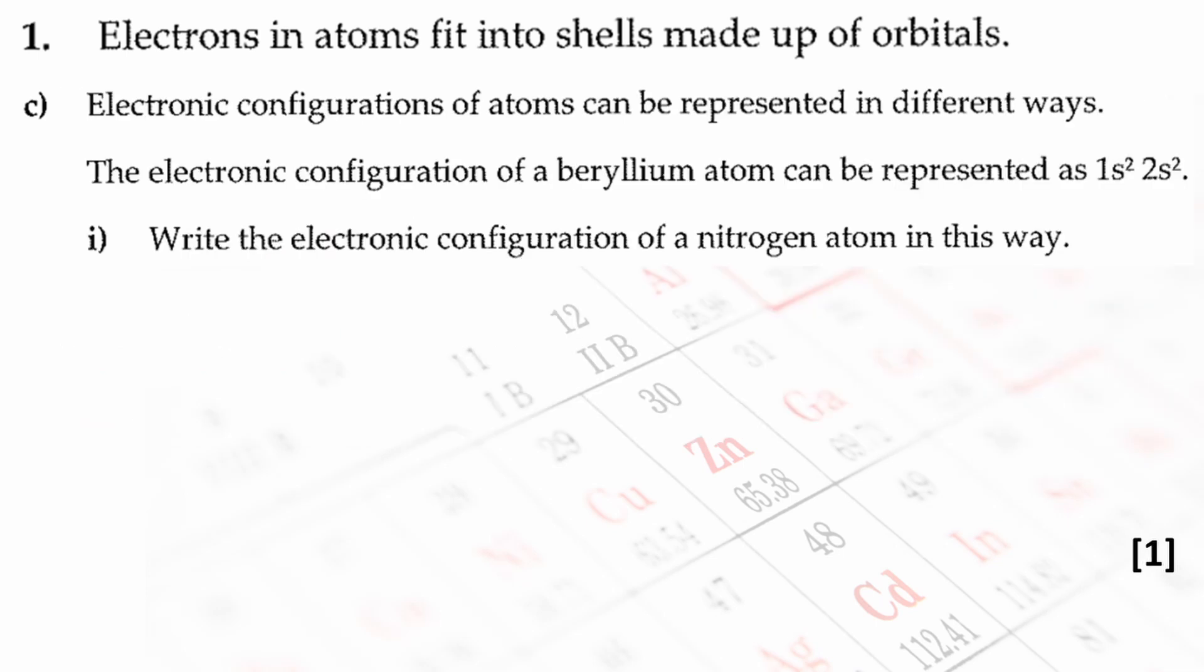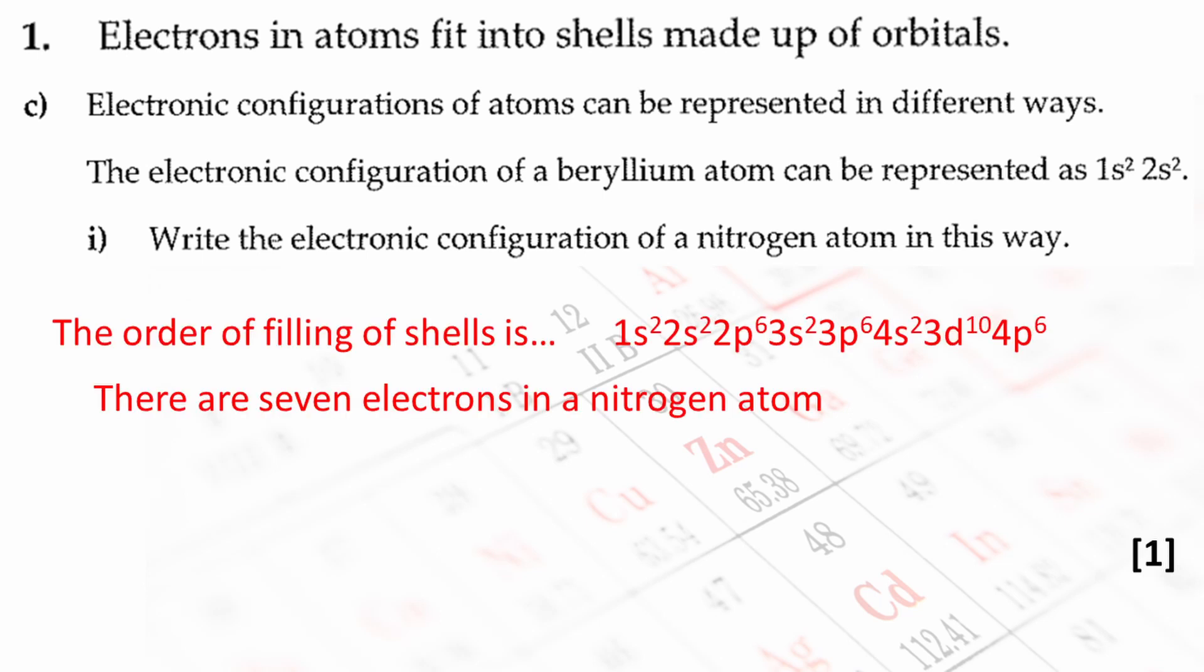Here's the final part of this question. The electron configuration of a beryllium atom can be represented as 1S2, 2S2. Write the electron configuration of a nitrogen atom in this way. The order of filling of shells is 1S2, 2S2, 2P6, 3S2, 3P6, 4S2, 3D10, 4P6. There's no getting around this. It's just something that you have to memorize. Use the data sheet to find out that there are seven electrons in a nitrogen atom.